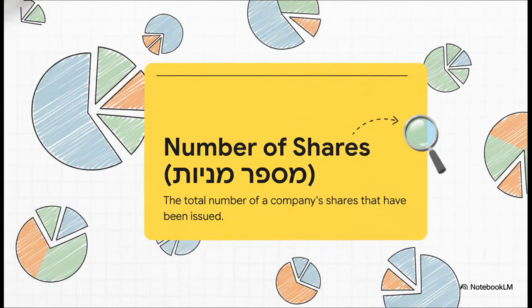And the second piece of the puzzle? The number of shares. This is just all of them. The total number of shares that the company has ever issued. You can kind of think of it as all the individual slices of the company pie that exist out in the world.